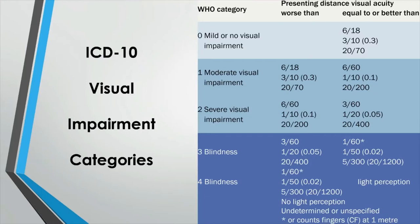Category two is severe visual impairment, where vision is worse than 6/60 but equal to or better than 3/60. The final category, category three, is blindness, where vision is worse than 3/60. It is important to remember that visual status categories are based on visual acuity measuring the better eye, and blindness is also used if the visual field is less than 10 degrees from a point of fixation.